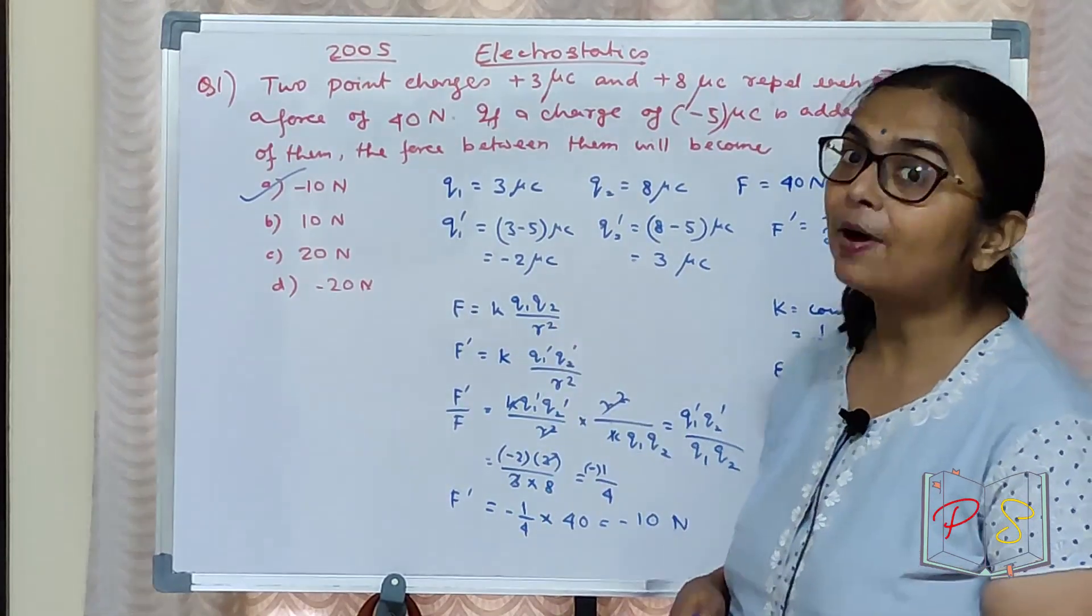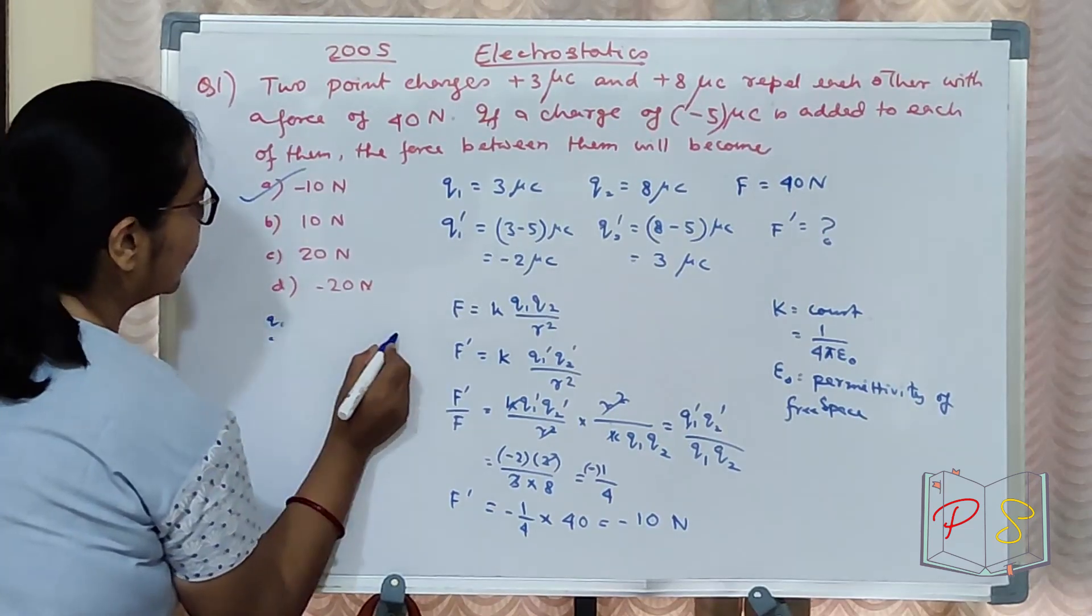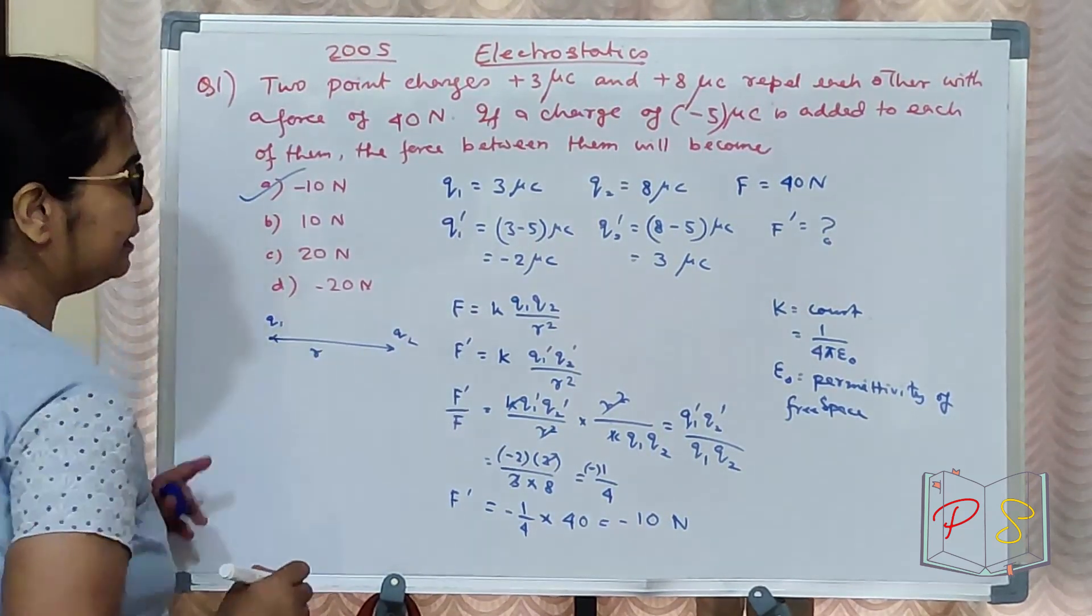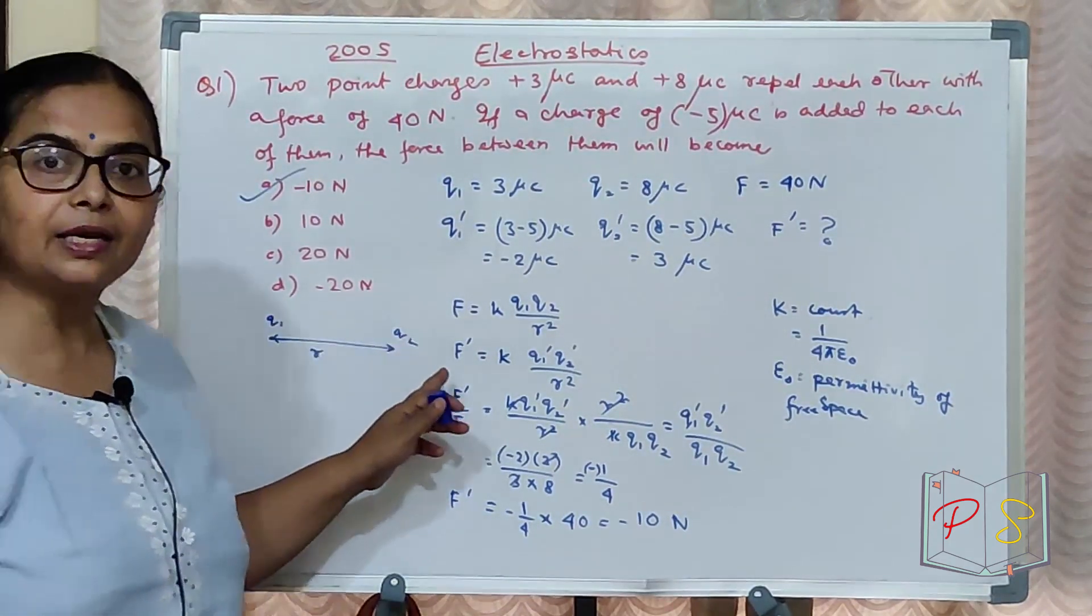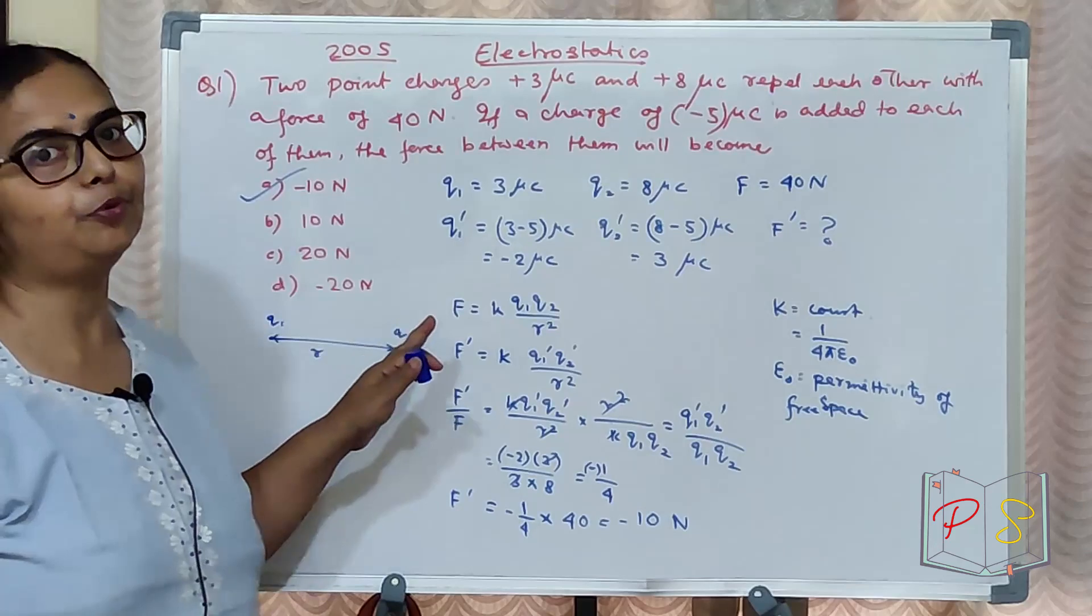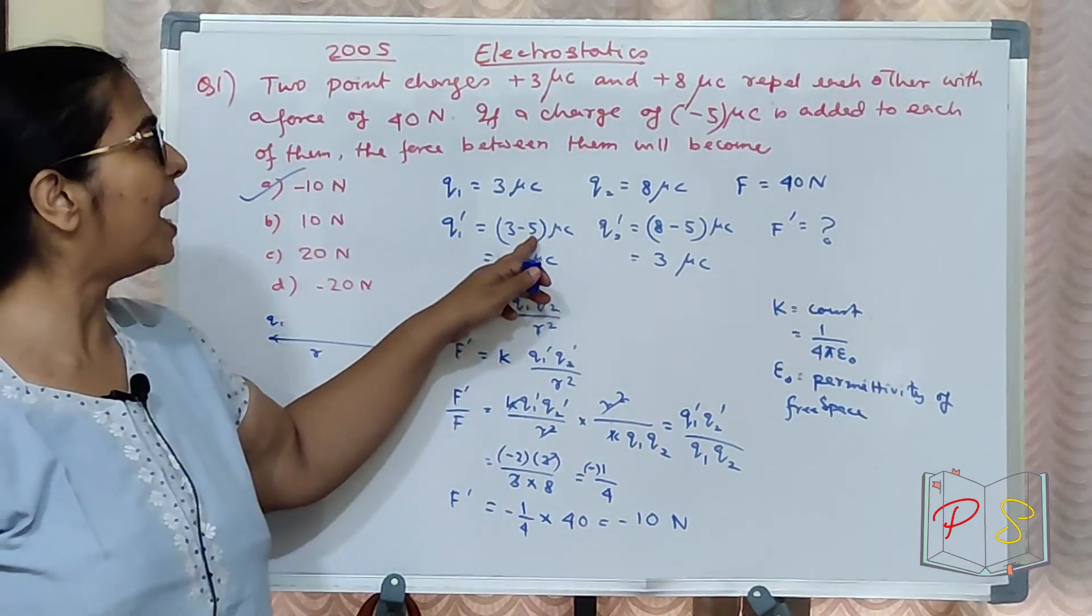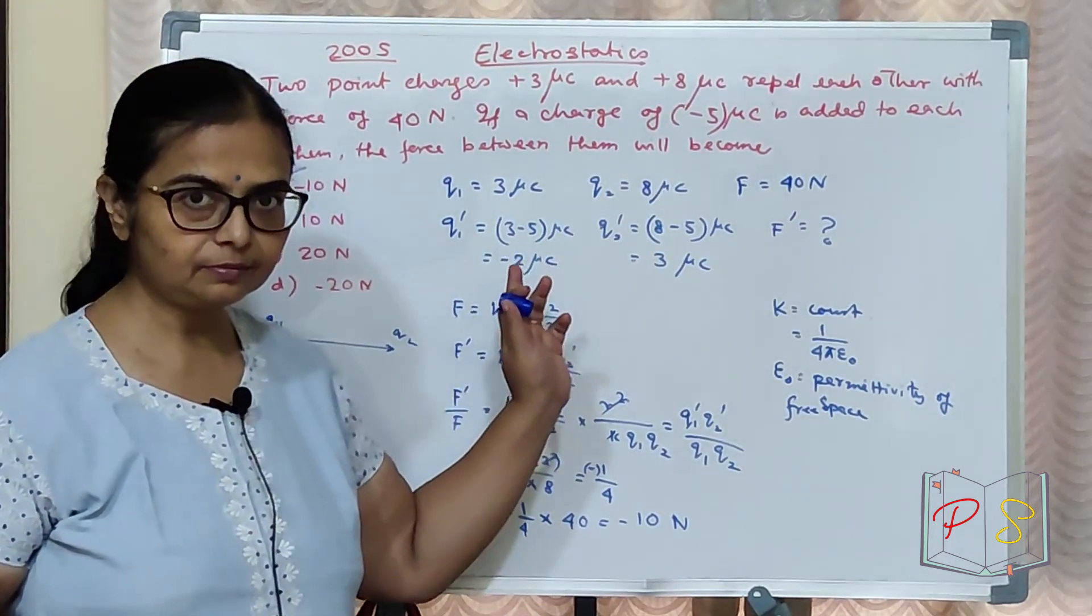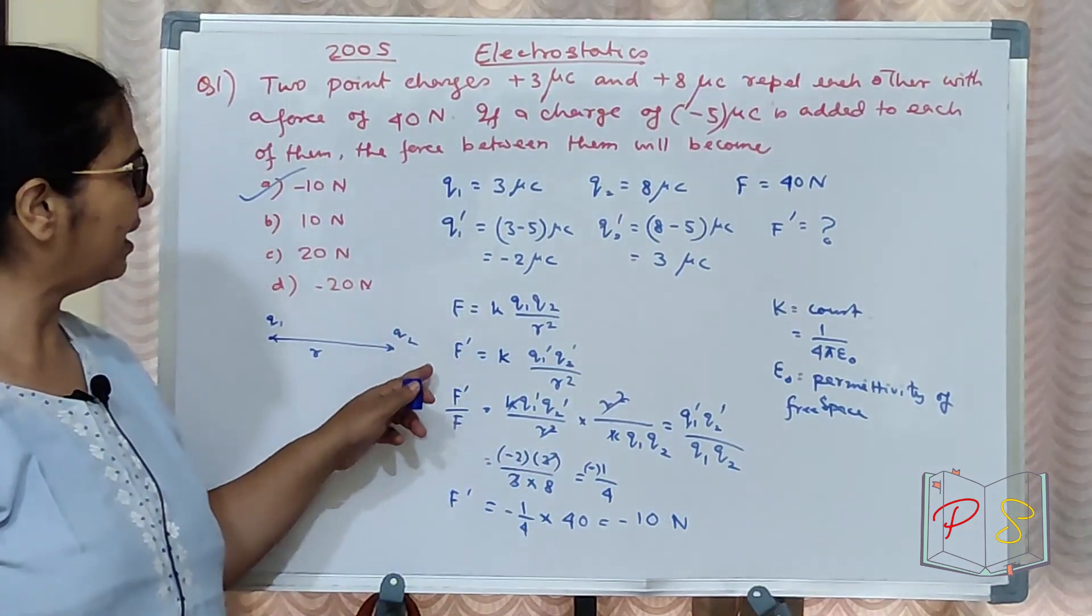This R is what? Two point charges Q1 and Q2 and distance between them is R. This R remains same when this is Q1, Q2 or Q1 dash Q2 dash. How did Q1 dash Q2 dash come? Because minus 5 micro coulomb you added in both cases.